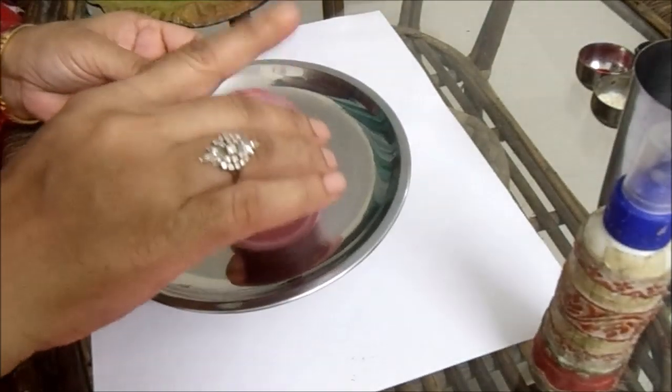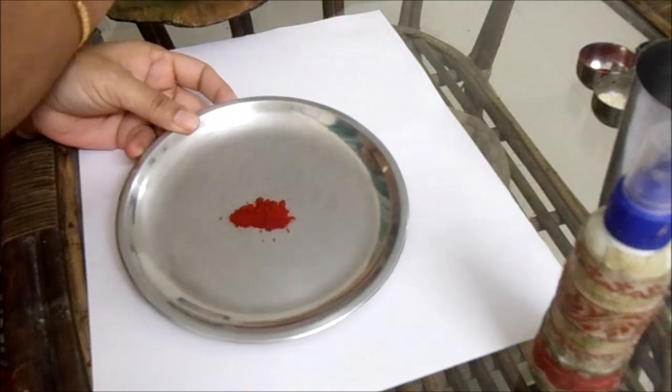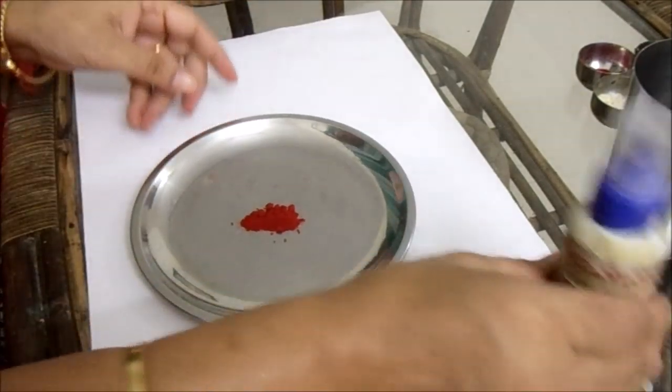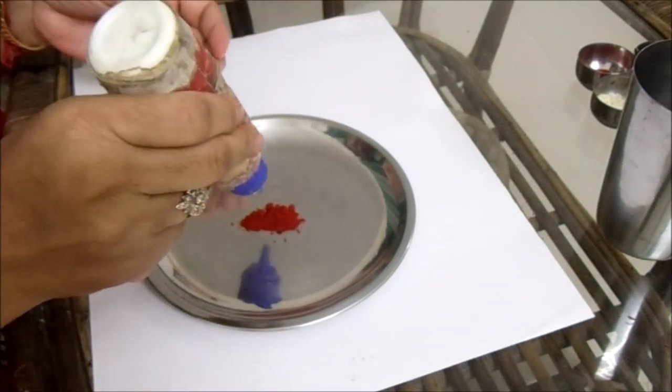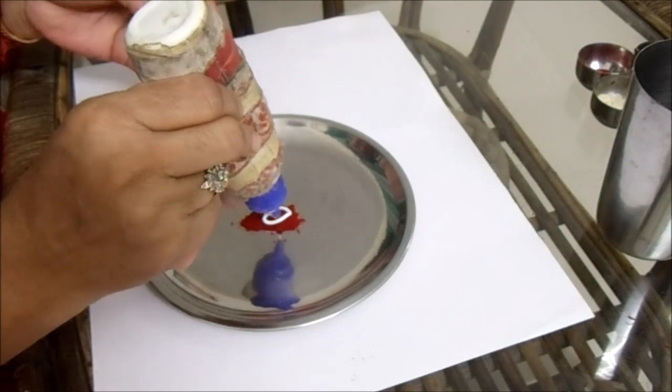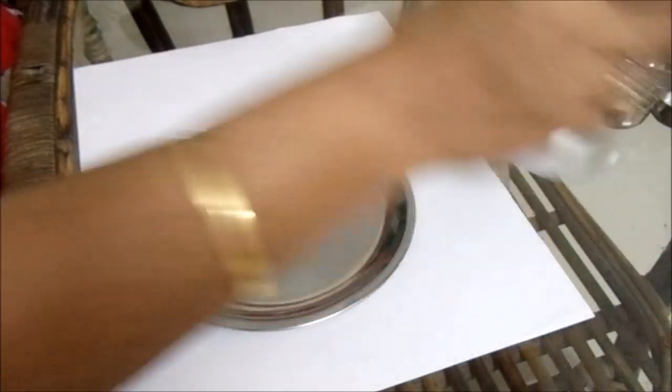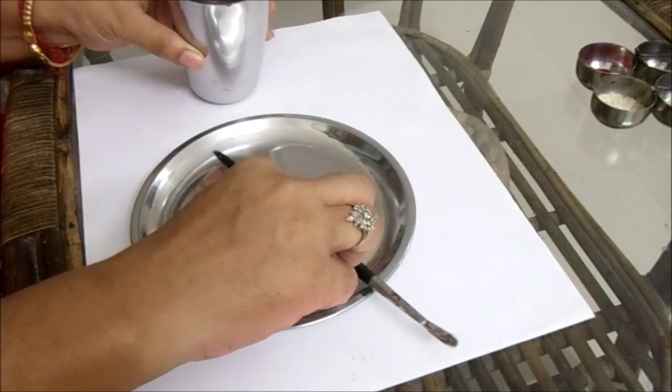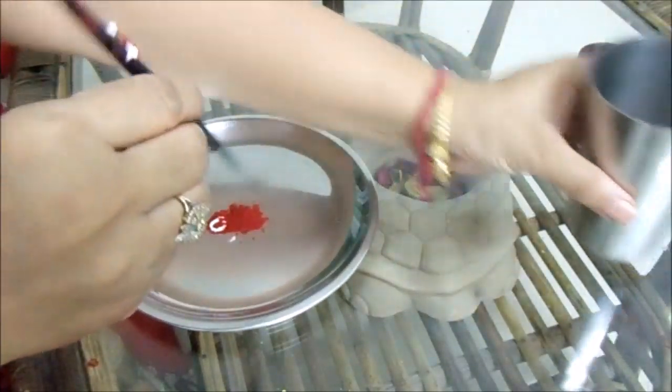Put some Kum Kum on the plate. Now white glue. Add some white glue. Oops. Now add some water.